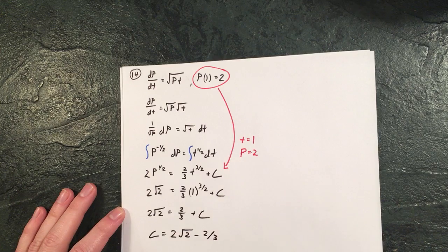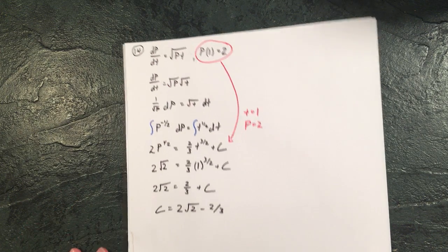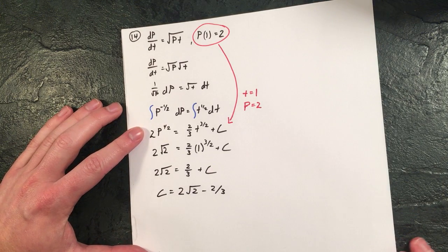Two-thirds times two. So really this is two root two equals two-thirds plus c. Solving for c you just have to subtract that two-thirds and then the final step is just rewriting it back in this line where we put it in.